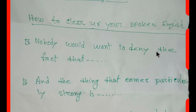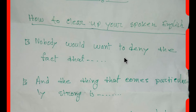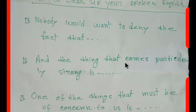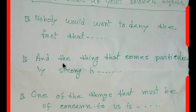Our first expression is: 'Nobody would want to deny the fact that...' You have to use a clause according to your necessity. For example: 'Nobody would want to deny the fact that he is not an honest man.' Our second expression is: 'The thing that comes particularly strong is...'